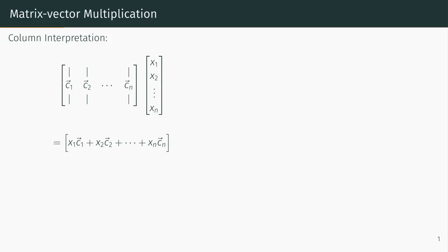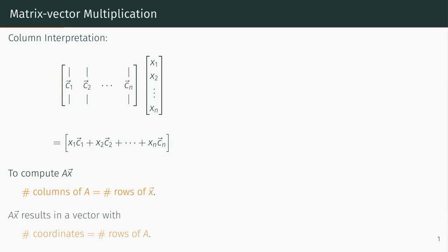There are two properties of matrix-vector multiplication we can deduce from this interpretation. The first is that in order to compute a matrix-vector product A times the vector x, the number of columns of A must be the same as the number of rows of the vector x. The result of A times x is a vector where the number of coordinates is the same as the number of rows of the matrix A.